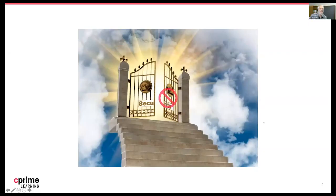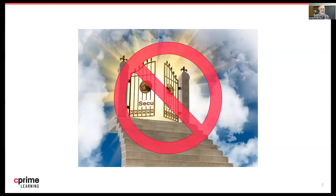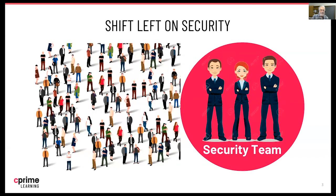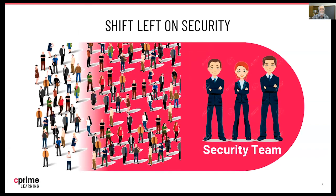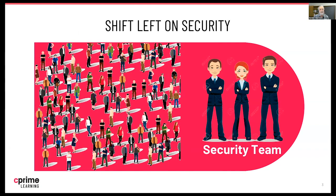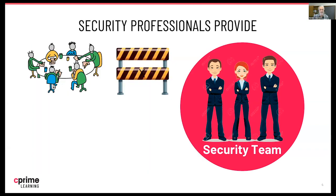We're all used to this idea of having a security gate that we are marching towards at the end of our projects. It's really a problem that we need to get rid of. So that's really what I'm talking about here: how to get rid of the security gate at the end of your process. The security team is incredibly important, but they can't be the only ones responsible for security. Shifting left means that we all now become responsible for security in our projects and everything that we do.